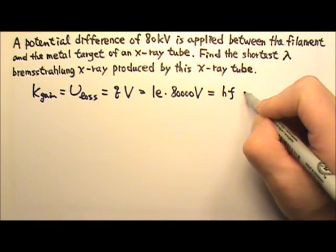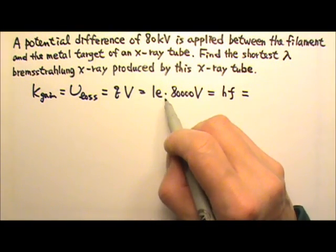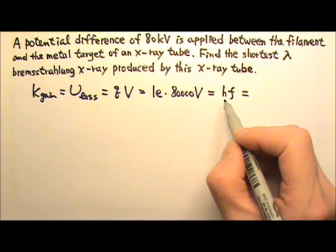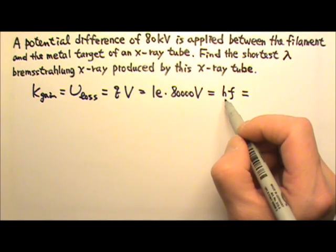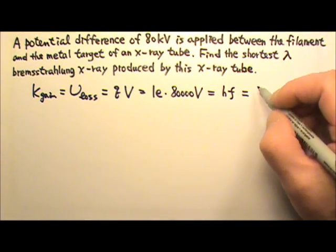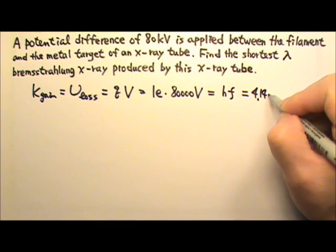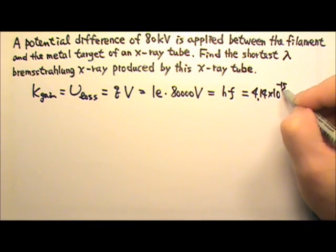Because I'm going to have eVs over here, I'm going to use the H that has the eV second as unit. So H is 4.14 times 10 to the negative fifteenth.